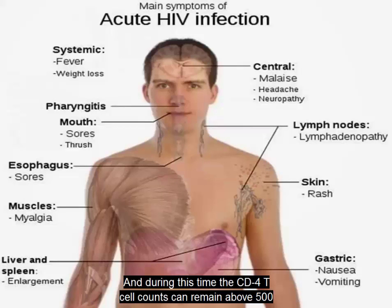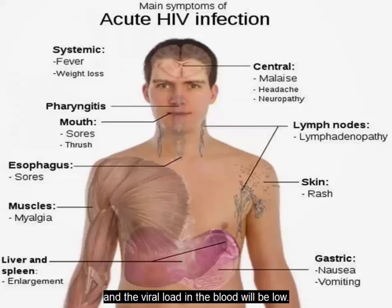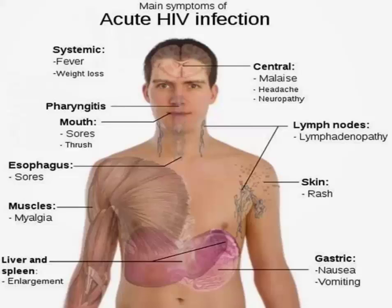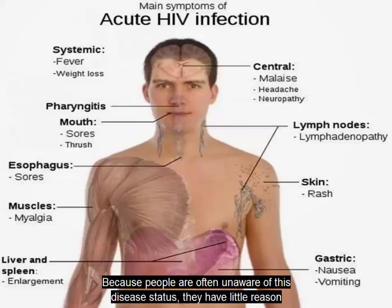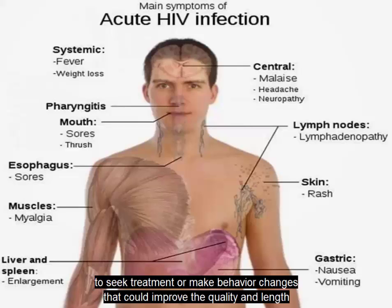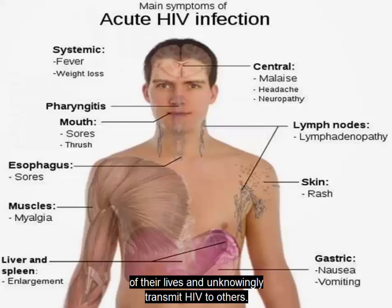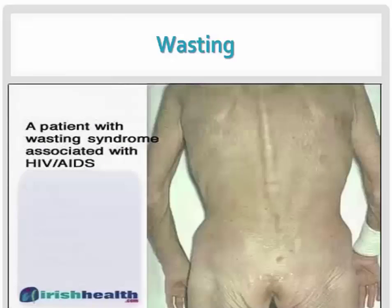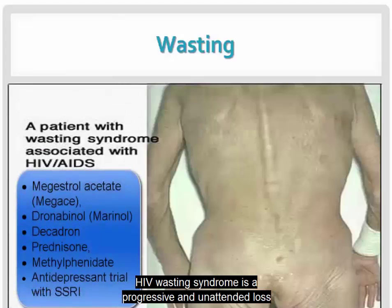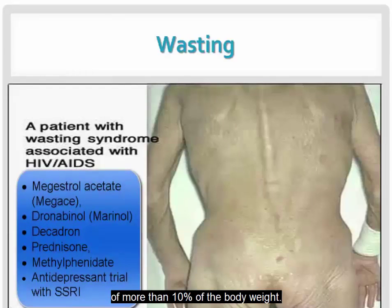During the asymptomatic phase, the CD4 T cell counts can remain above 500 and the viral load in the blood will be low. Because people are often unaware of their disease status, they have little reason to seek treatment or make behavior changes. They unknowingly transmit HIV to others. HIV wasting syndrome is a progressive and unintended loss of more than 10% of the body weight.